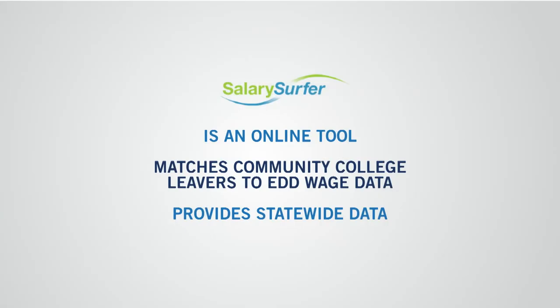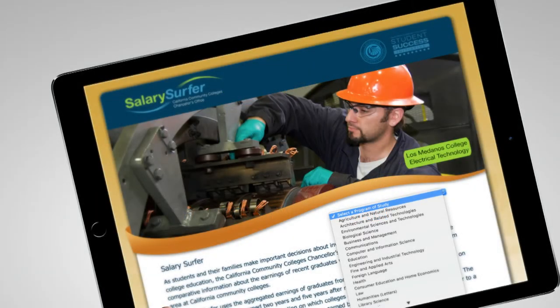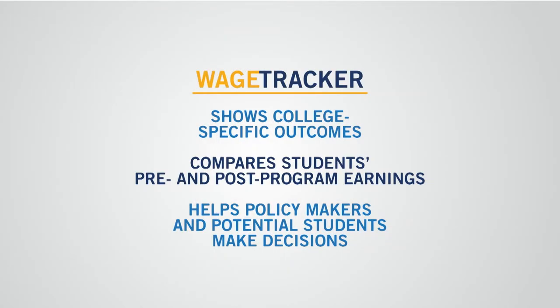Salary Surfer provides statewide data on pre- and post-earnings for completers in community college programs. It is built by matching community college leavers to EDD wage data. This data helps policymakers at the state and local levels evaluate the economic outcomes of occupational fields. Wage Tracker is a look at pre- and post-earnings for completers at the college level. This is useful information for local decision-makers and for potential students who are deciding what field of study they want to pursue.